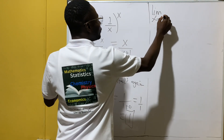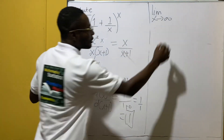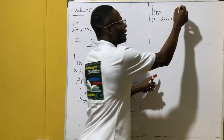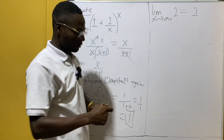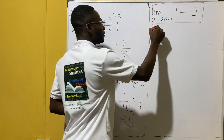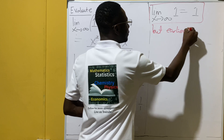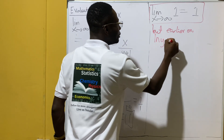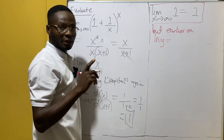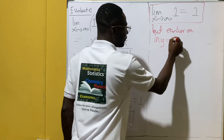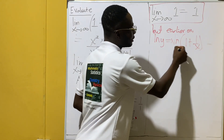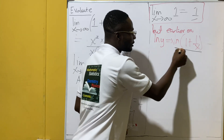So lim as x approaches infinity equals 1. We know that lim as x approaches infinity of 1 is of course 1. We have been able to obtain the value of that expression. But earlier on we said that ln y should be equal to that expression, which was x times ln(1 + 1/x), and we simplified to get 1. So this means ln y equals 1.